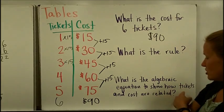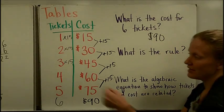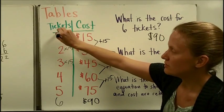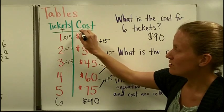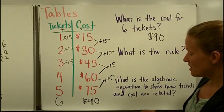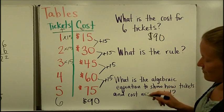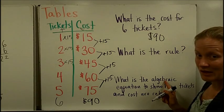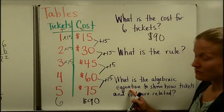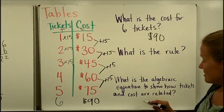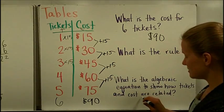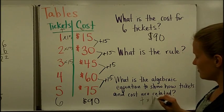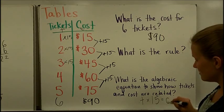What is the algebraic equation to show how the tickets and the cost are related? That's what we were just doing here. So we could use the variable t to represent tickets, and we could use the variable c to represent the cost. So if we were going to write an algebraic equation, algebraic just means includes variables, an equation means has an equal sign. We could say the number of tickets, t tickets, times 15 dollars a piece equals the cost, c.